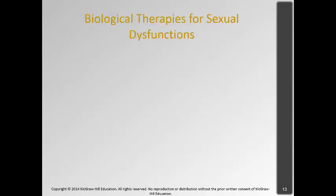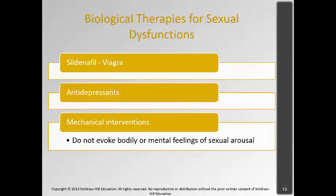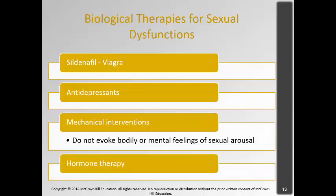There are some biological therapies for sexual dysfunction. There is Viagra, and there are antidepressant medications for people whose depression and anxiety are causing low sex drive. There are also mechanical interventions — a wire can be implanted in the penis to make it erect, though it doesn't necessarily evoke mental feelings of arousal but makes physiological intercourse possible. There's also hormone therapy, where people take testosterone or estrogen supplements to elevate their hormone levels.